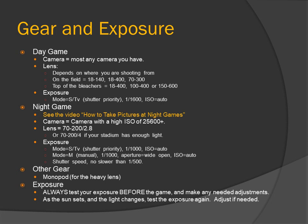Alternatively, use mode M (manual): 1/1000th of a second, aperture wide open, ISO auto. Shutter speed should be no slower than 1/500th of a second. Other gear: use a monopod for the heavy lens. That 70-200 f/2.8 is a heavy lens, and so is the 150-600.